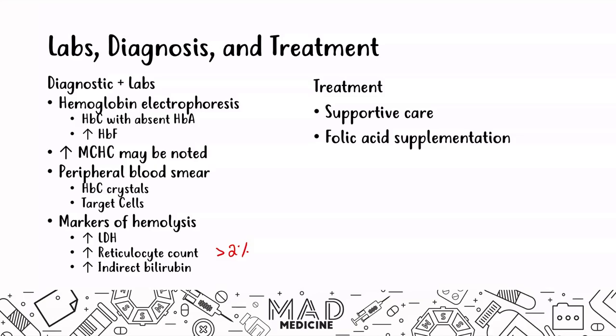Let's quickly recap. In hemoglobin C disease, you're going to have a glutamic acid mutation to lysine — remember, glutamic acid to valine is sickle cell anemia. In HbC, you have glutamic acid to lysine. Hemoglobin C has a high affinity for crystallizing in the serum, so under the microscope you're going to see crystallized hemoglobin C molecules.